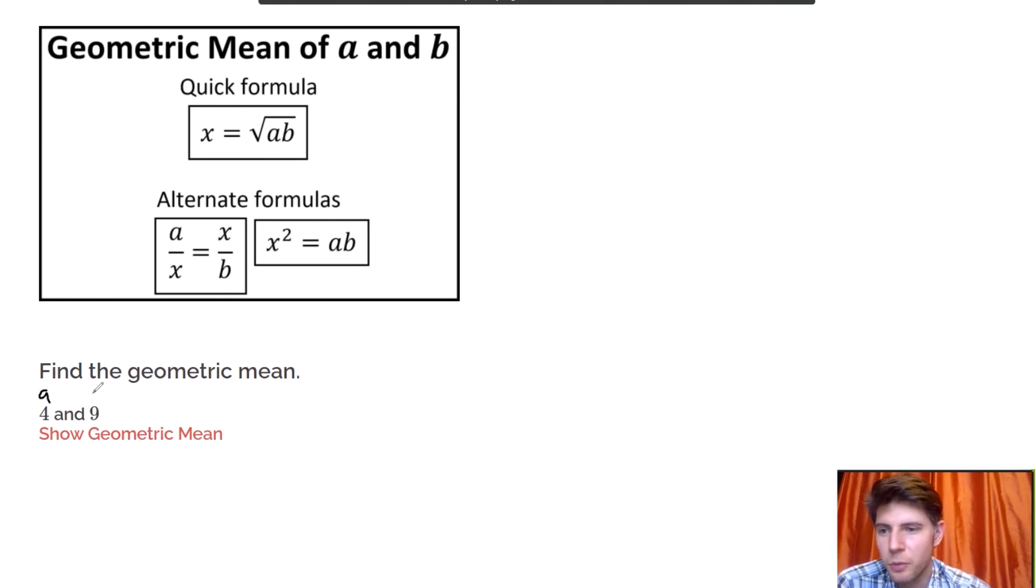A, in this case, A is 4 and B is 9. So we can either say x equals the square root of 4 times 9. 4 times 9 is 36, so square root of 36 is 6.